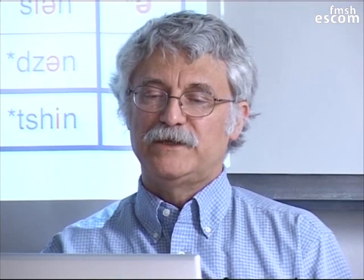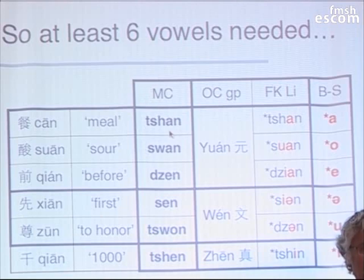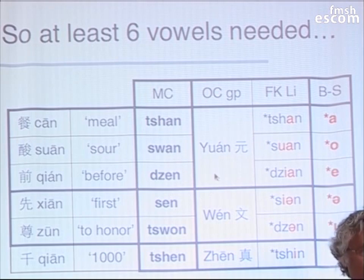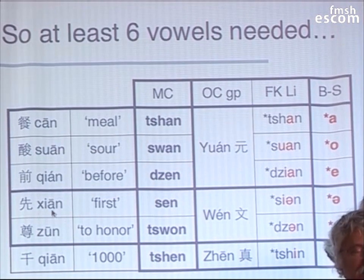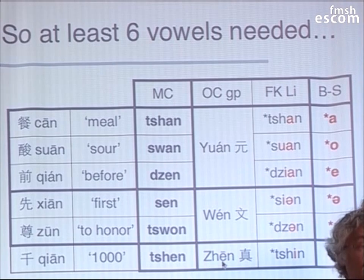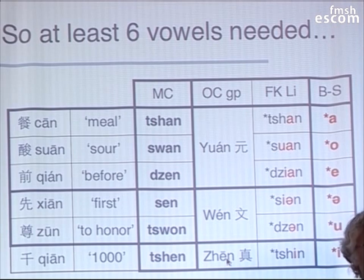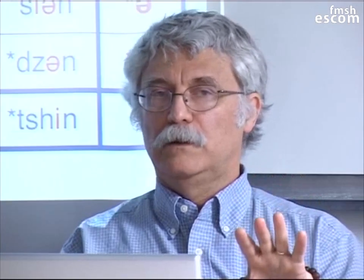So, that looks like then we are going to need at least six vowels, because we had four, but one of them has three origins, so it has two more than what we had — we need six vowels just for this. This is the way they work out. The A-N, W-A-N, and E-N all occur in the traditional Yuan rhyme group. The E-N in 'Qian' and 'Zun' are assigned to the traditional Wen rhyme group. And 'Qian' is assigned to the Zhen rhyme group.